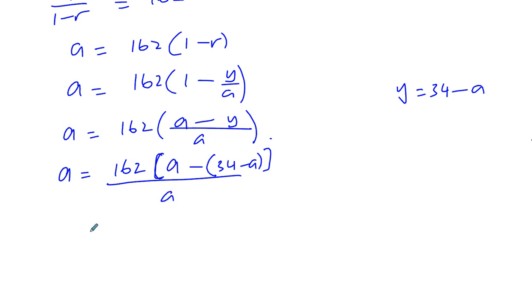Let me multiply both sides by A to get rid of this A here. So you have A squared equals 162 times A. You've got minus minus A. That's going to be 2A and minus 34. So you have A squared equals 162 times 2A, 324A. And you're going to have minus 34 times 162.